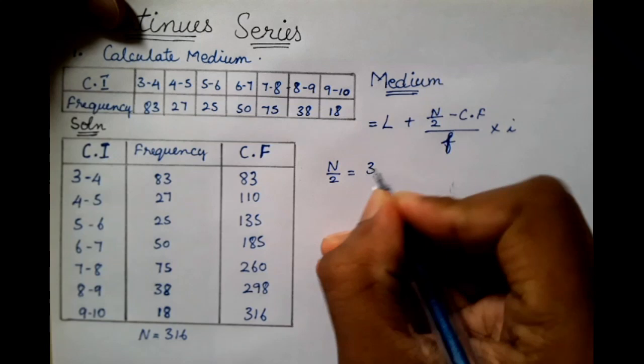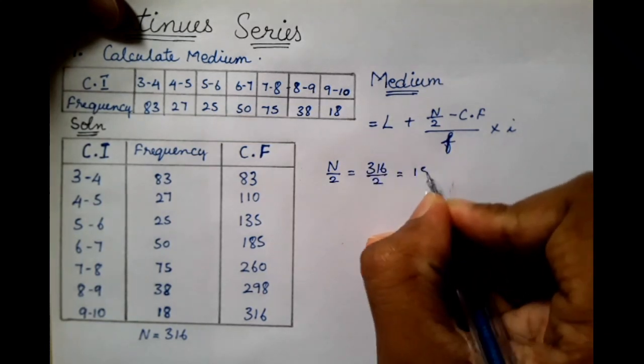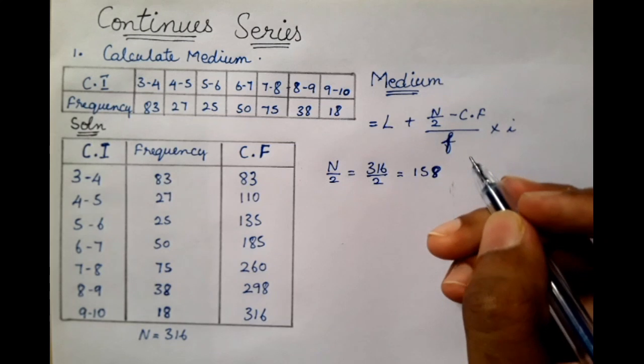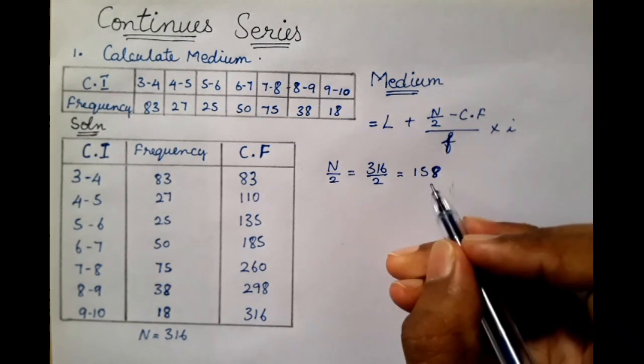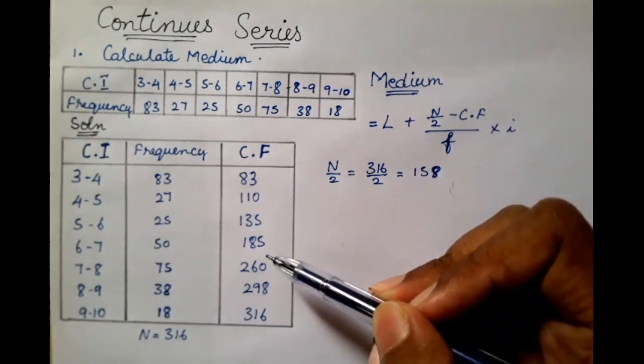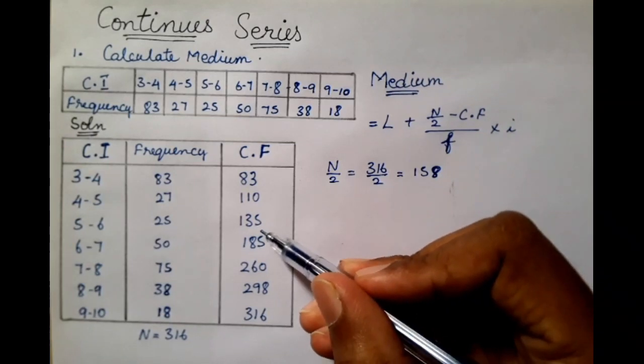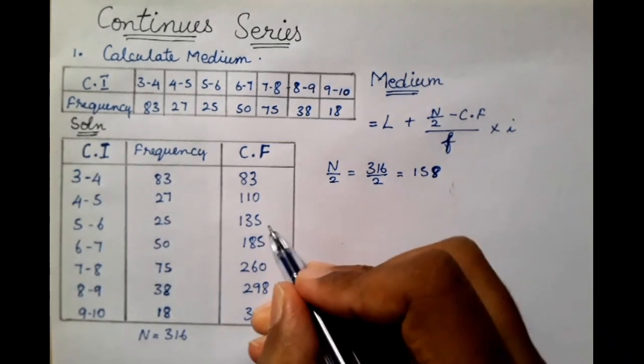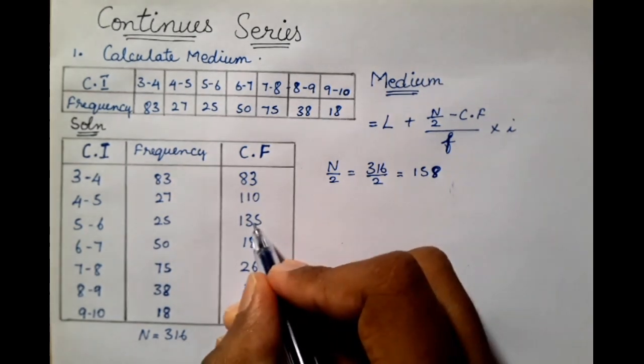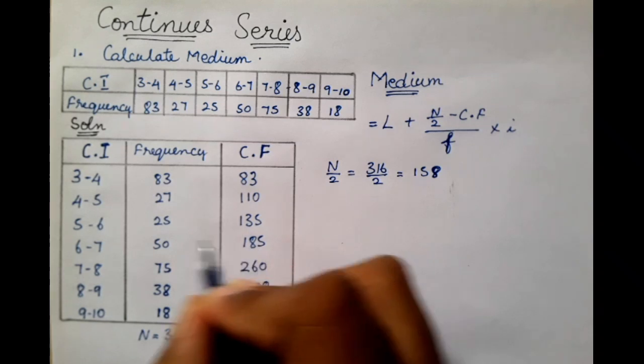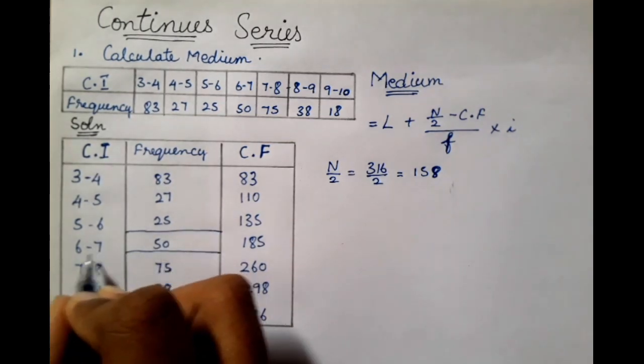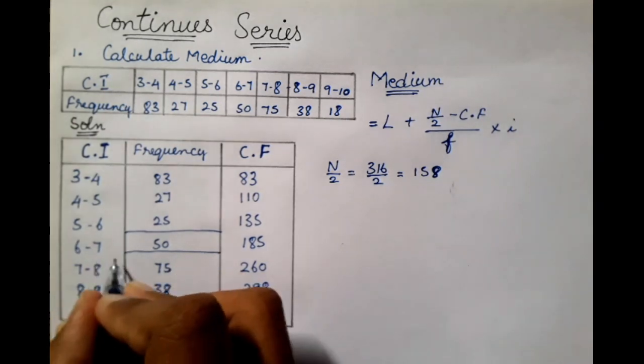N by 2 equals 316 divided by 2, which is 158. The 158 is in the cumulative frequency, so we will see where it comes from. 158 is between 135 and 185. What number is close to 158? There is 135. So 135 is the CF, and in the next line we will take the frequency 50 and the lower class interval 6 to 7.